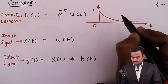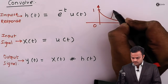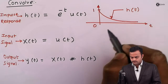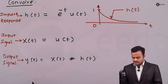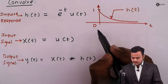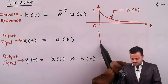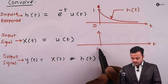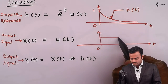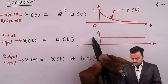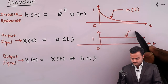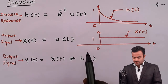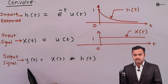At t = 0, h(t) has a value of 1, giving us the exponential decay shape. For x(t) = u(t), it is a unit step, so it quite simply has the value 1 from 0 to infinity. These are the two signals given and we need to find their convolution to get y(t).